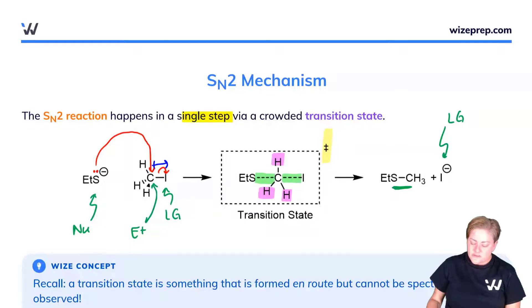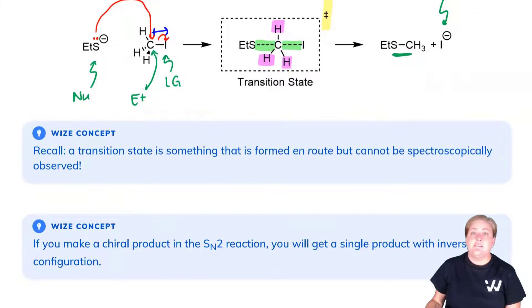So recall that a transition state is something that is not spectroscopically observed but we can propose en route.